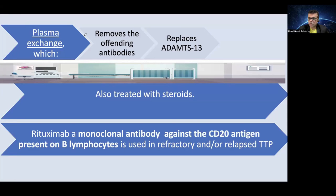Regarding treatment, plasmapheresis is widely used and performed in many patients. Plasmapheresis exchanges the patient's plasma with normal plasma, which supplies normal ADAMTS13 and replaces the offending antibodies present in the patient's plasma. Antibodies against ADAMTS13 are thereby removed and replaced with functional ADAMTS13 present in normal plasma. Refractory cases may also be treated with steroids to decrease immune activity.